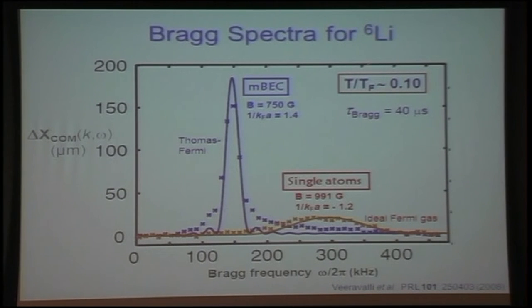So Bragg spectrum for lithium-6, we measure the observable is the center of mass displacement, which occurs due to the transfer of momentum to the atoms or molecules. And we plot this versus the Bragg frequency, omega, along the x-axis. So we see the molecular BEC, we see a high peak here at this value of the magnetic field on the BEC side of the Feshbach resonance. And then, on the single atom side, on the BCS side, we see a broader resonance here corresponding to something close to an ideal Fermi gas we've plotted in here.